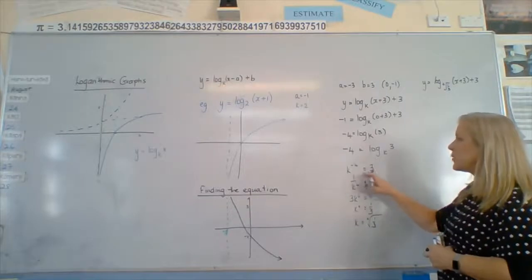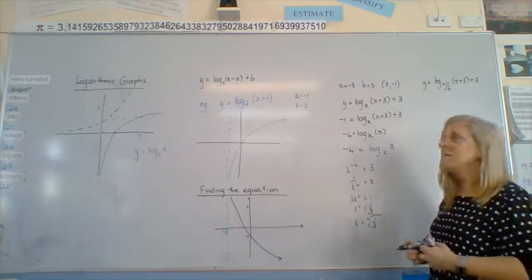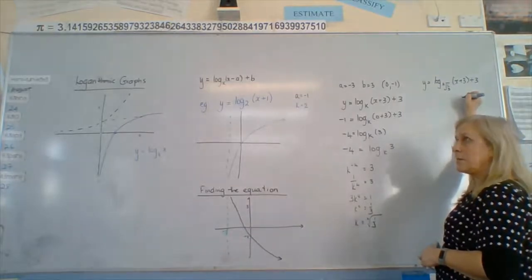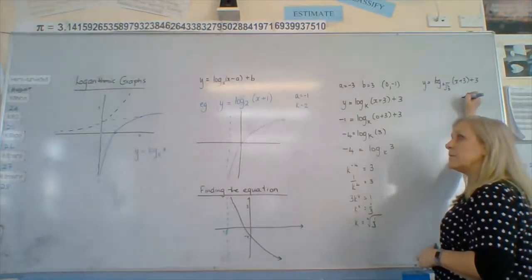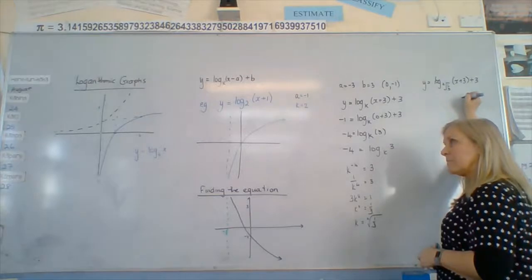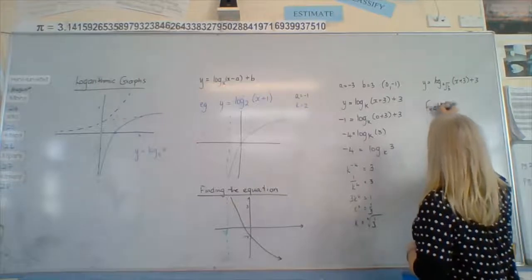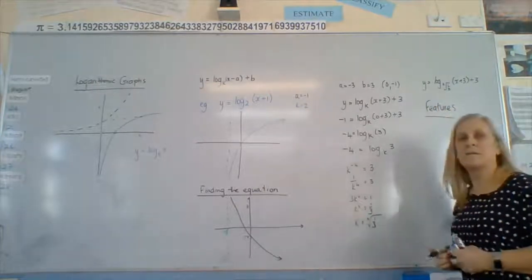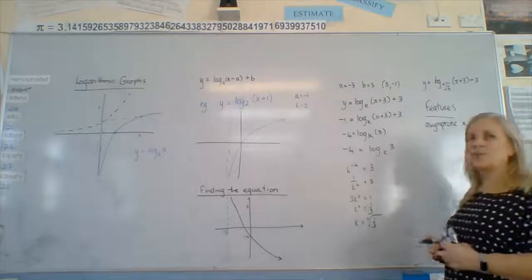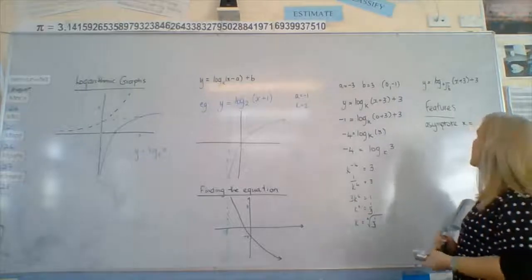Can k be a negative? Can logs have negative bases? No. Features: what have we got? Asymptote — and this time it will be a vertical asymptote, x equals something.